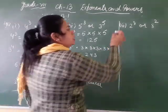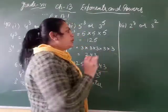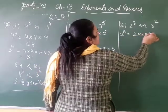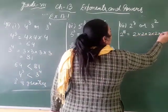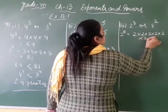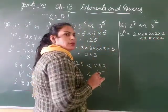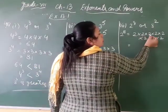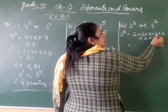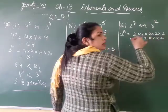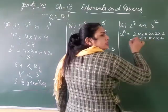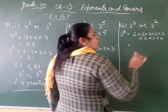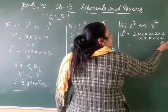Next is 2 raised to power 8 versus 8 raised to power 2. 2 raised to power 8 means we multiply 2 by itself 8 times. So: 2 twos are 4, 4 twos are 8, 8 twos are 16, 16 twos are 32, 32 twos are 64, 64 twos are 128, and 128 twos are 256.